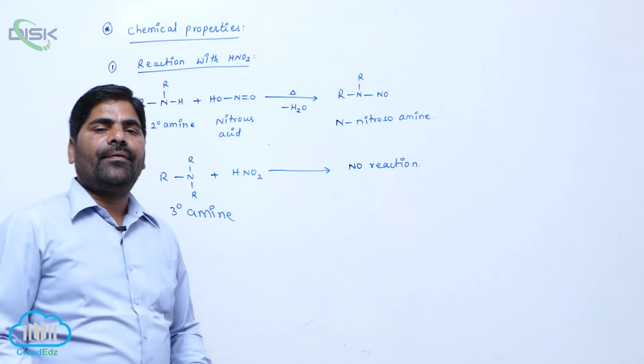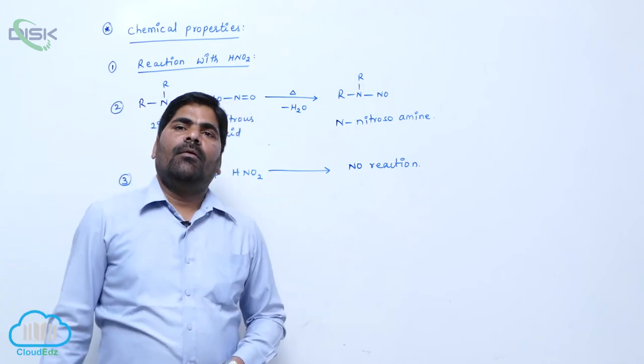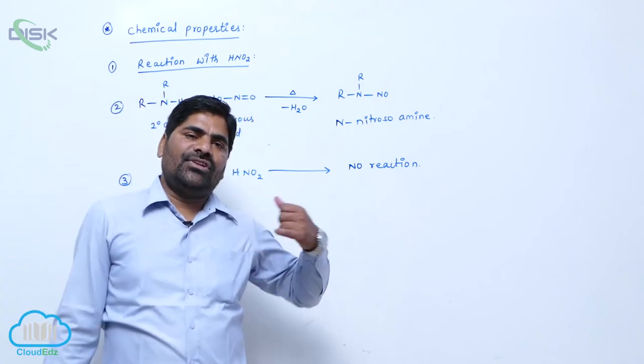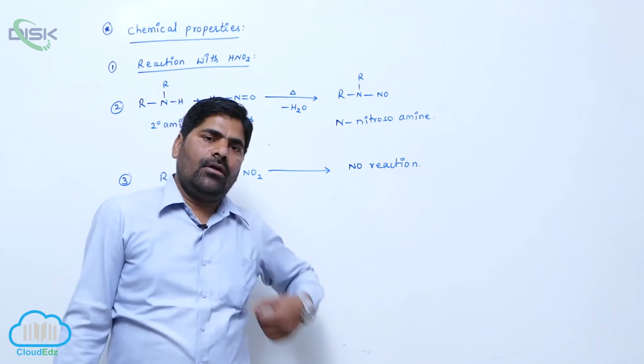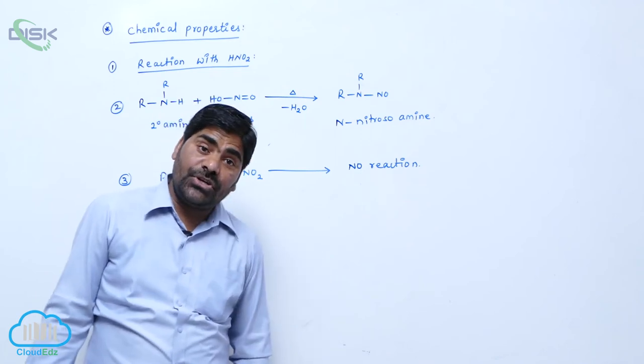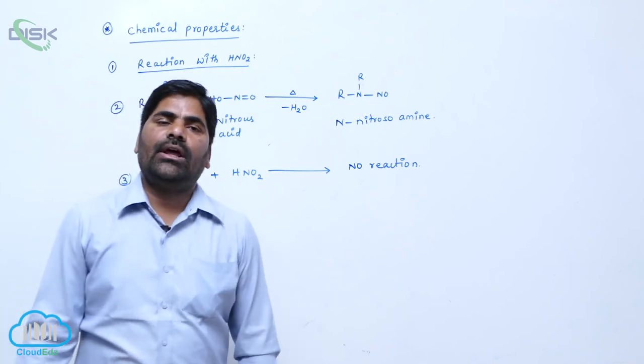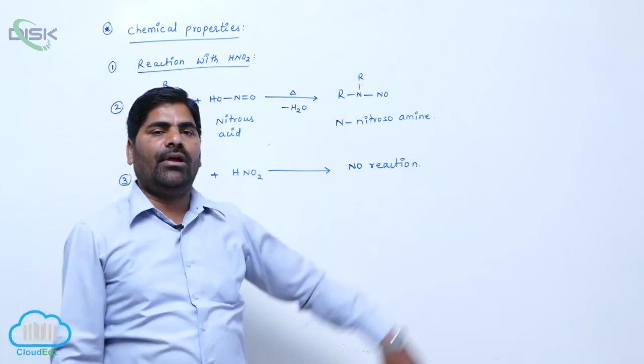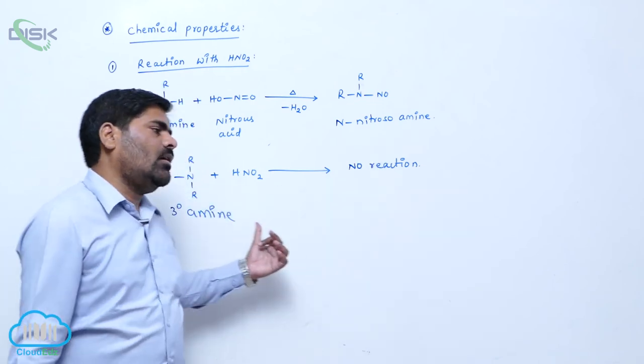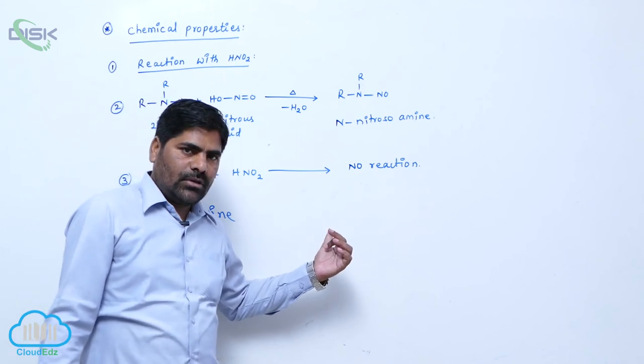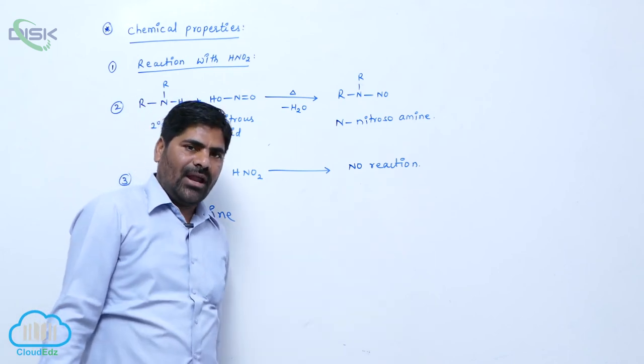So with this, by using nitrous acid, 1 degree, 2 degree, and 3 degree amines are separated. So 1 degree amine converts into alcohol, 2 degree amine converts into nitroso derivative, 3 degree amine cannot react with nitrous acid.